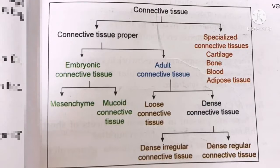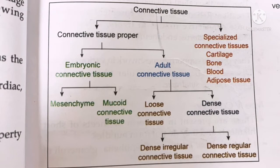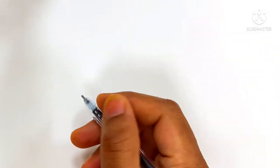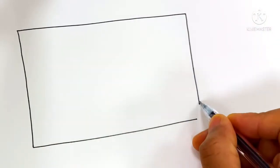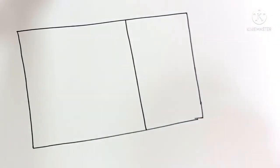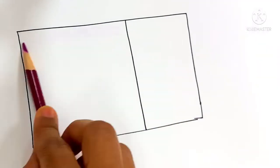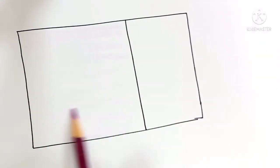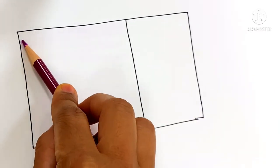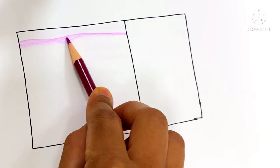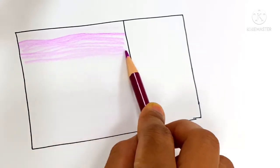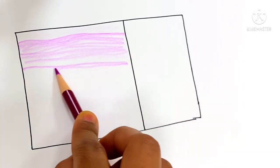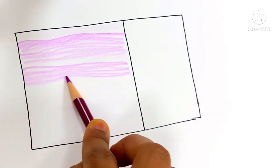Dense regular connective tissue. Here we are drawing the histology of dense regular connective tissue. It contains type 1 collagen fiber, with more fibers and very few cells. The fibers are arranged compact, parallel, and in thick bundles—regular thick bundles—and this bundle shows a wavy appearance.